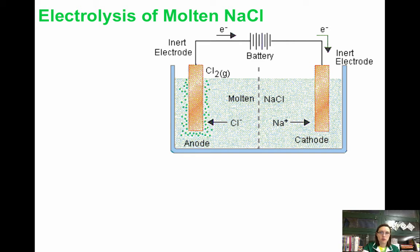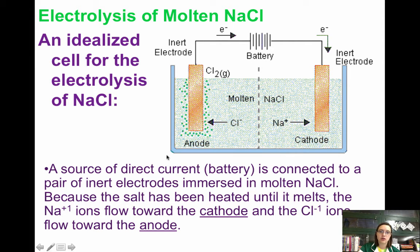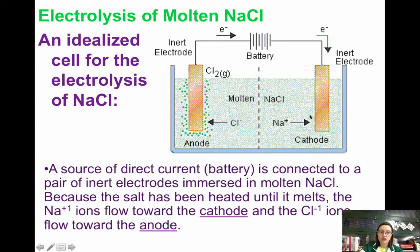Now we're going to look at electrolysis of molten NaCl compared to aqueous NaCl. This is what an ideal electrolytic cell would look like. You have two inert electrodes — the anode and the cathode. Remember, the anions are attracted to the anode and the cations are attracted to the cathode. You have a battery pulling electrons from the anode to the cathode, and you need a source of direct current connected to the two inert electrodes immersed in the molten NaCl. This is probably at a very high temperature because you had to melt down solid sodium chloride into liquid.